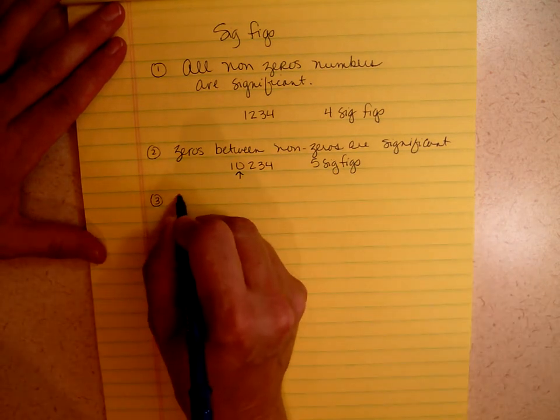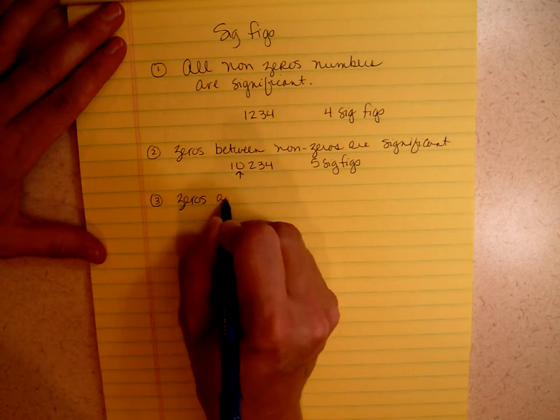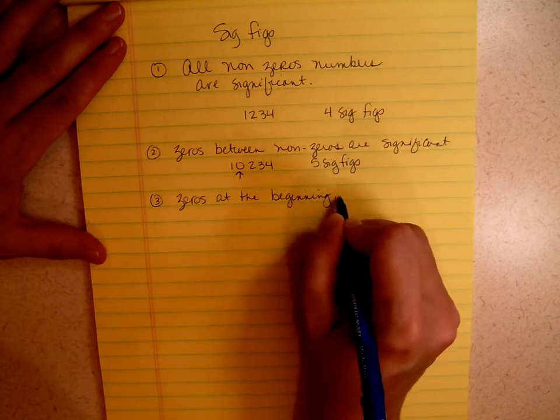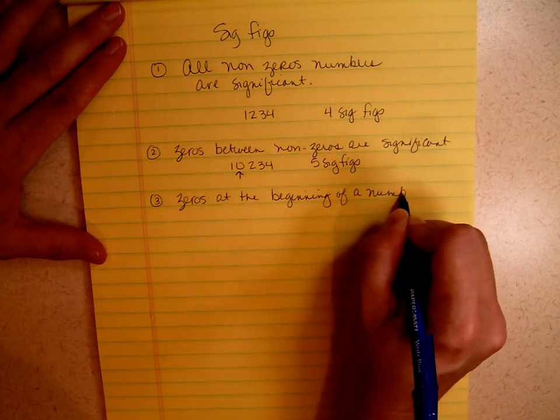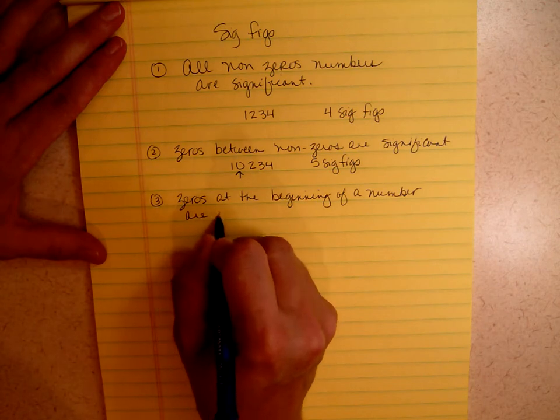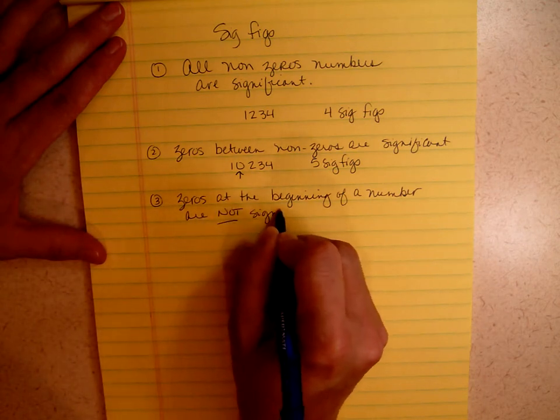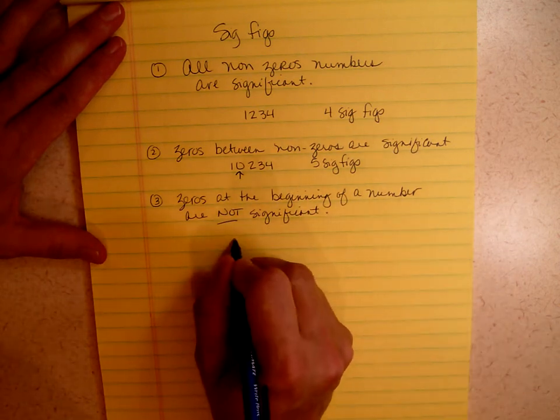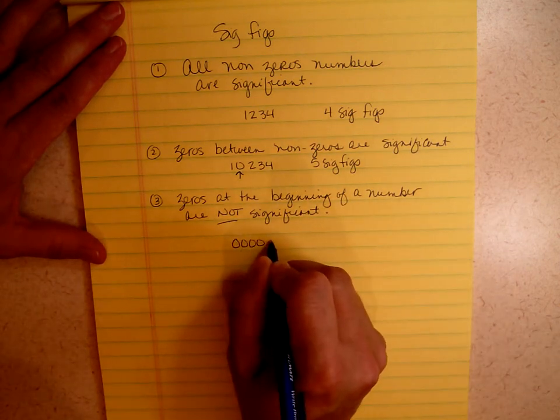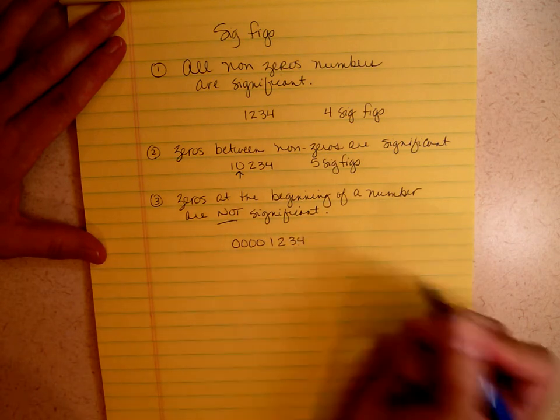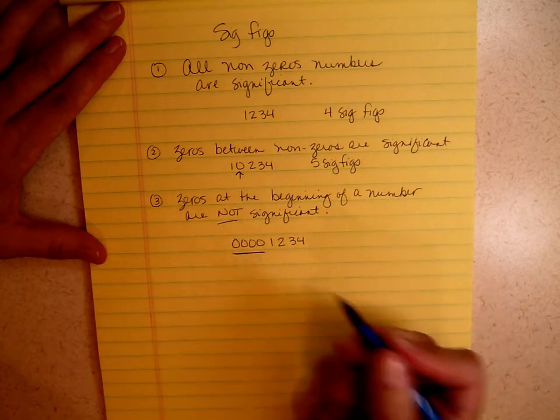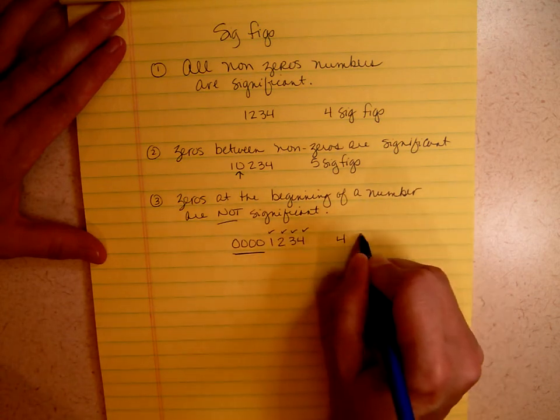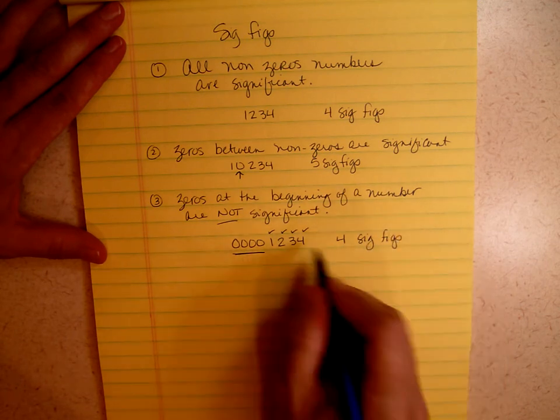Rule number 3, zeros at the beginning of a number are not significant. They are simply placeholders. And what do I mean by that? If you saw the number 0.001234, these zeros are at the beginning of a number, so they are not significant. You have four sig figs, not eight.